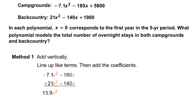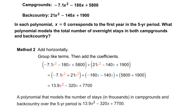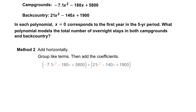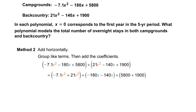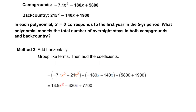We arrive at 13.9x squared minus 320x plus 7,700. We can also use Method two — adding horizontally. We group like terms, then add the coefficients. Grouping like terms we'd have negative 7.1x squared plus 21x squared, plus the group negative 180x minus 140x, plus the group 5,800 plus 1,900.